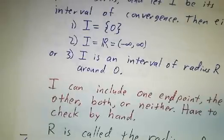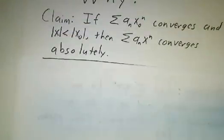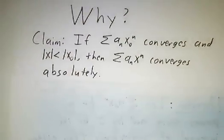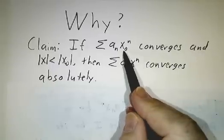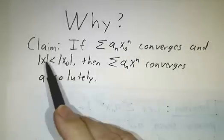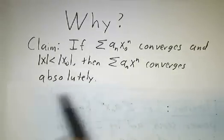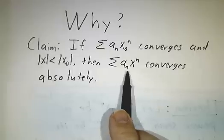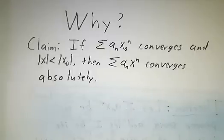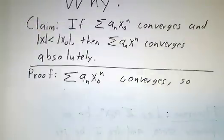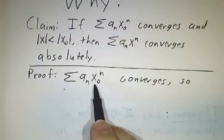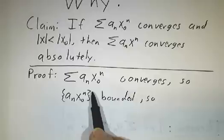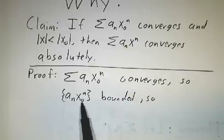So, why is this theorem true? Well, I claim that if you can find one place where it converges, let's suppose it converges at x0, then it converges for all values of x that are smaller than x0. In fact, it converges absolutely for all values of x that are smaller than x0. So to see this, let's suppose that this sum converges. Well, if the sum converges, then the terms eventually get closer and closer to 0. In particular, they don't get arbitrarily big. So the terms are bounded. So there's some number b, b for bound, that all of the terms are less than b.